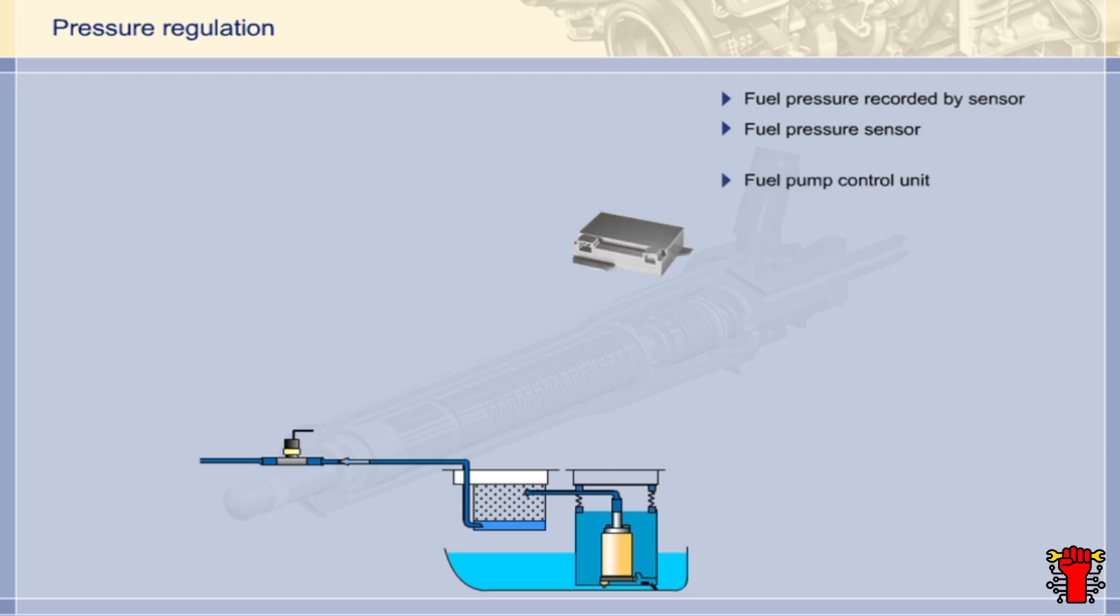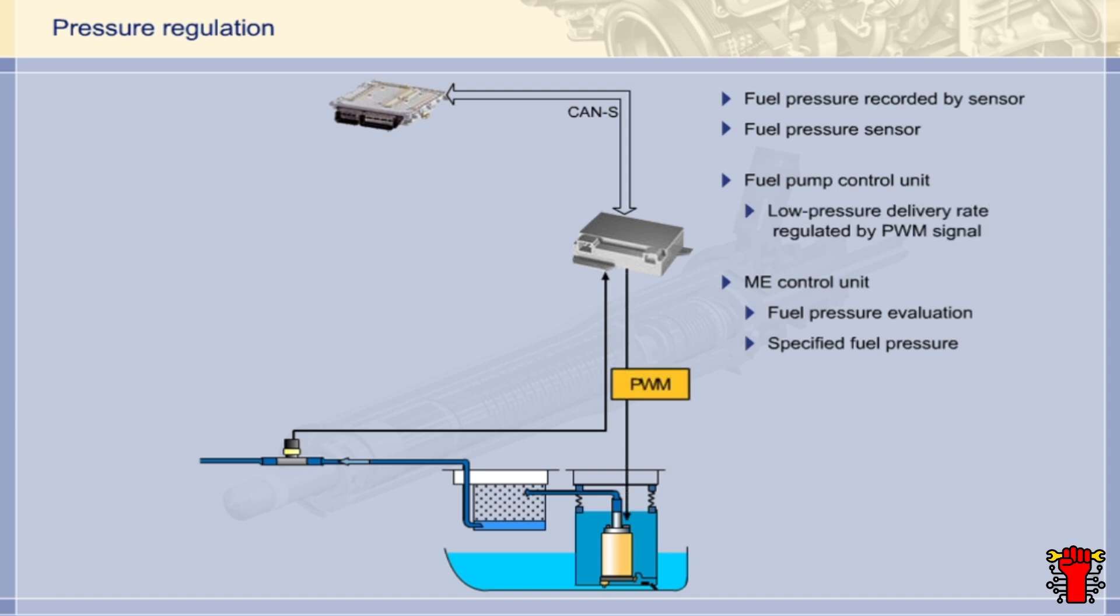The signal from the fuel pressure sensor is recorded by the fuel pump control unit. The pressure readings are sent via the sensor data bus to the ME control unit. The ME control unit checks the current fuel pressure against a map and forwards the recalculated pressure specifications to the fuel pump control unit. The fuel pump control unit regulates the rotational speed and thereby the pump delivery rate via a PWM signal until the required fuel pressure is achieved.